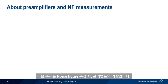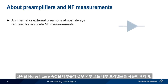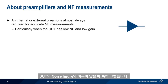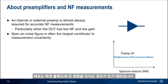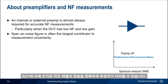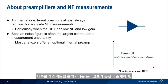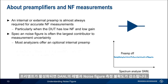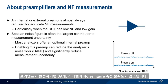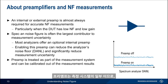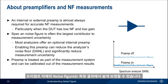Accurate noise figure measurements almost always require the use of an external or internal preamplifier, and this is particularly true when the device under test has a low noise figure and low gain. The reason is that the noise figure of the spectrum analyzer itself is often the largest contributor to measurement uncertainty. When the spectrum analyzer has a high displayed average noise level, or DANL, this can make it difficult to accurately measure small amounts of noise added by the device under test. Most modern spectrum analyzers have an optional internal preamplifier, and when this preamplifier is enabled, the DANL and thus noise figure measurement uncertainty are reduced. This preamplifier is treated as part of the measurement system, and the preamp's own noise figure can easily be calibrated out of the measurement results.